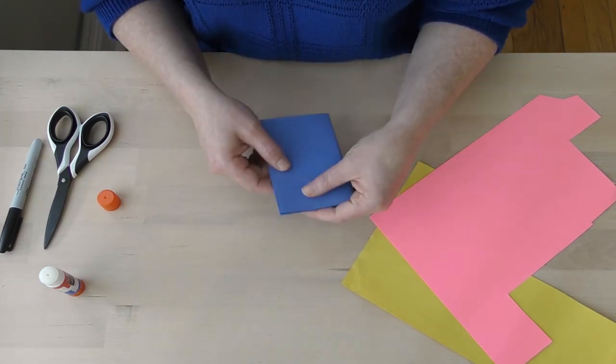So those are just two ways to make a door and a pocket. Thanks for joining me in the Create Space. Now that you've made a book like this, I encourage you to see what else you can create. Try out some new ideas, experiment, have fun, and make lots of books. Thanks. Bye.